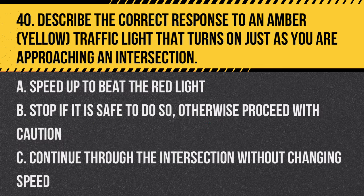Question 40. Describe the correct response to an amber (yellow) traffic light that turns on just as you are approaching an intersection. A. Speed up to beat the red light. B. Stop if it is safe to do so, otherwise proceed with caution. C. Continue through the intersection without changing speed. Answer: B. Stop if it is safe to do so, otherwise proceed with caution. A yellow light indicates that the light is about to change to red.